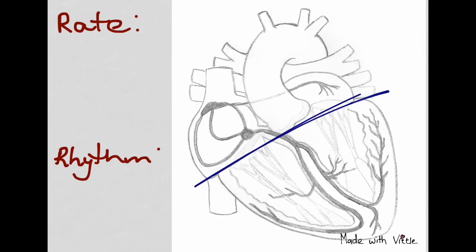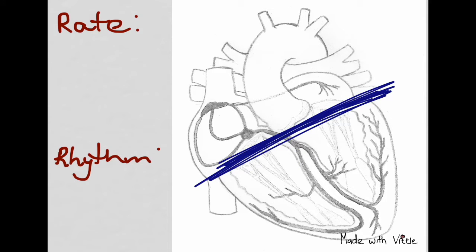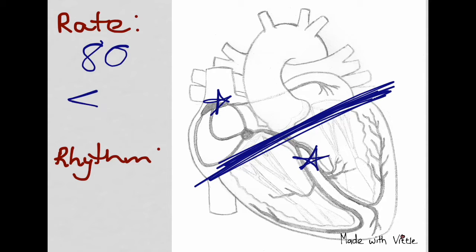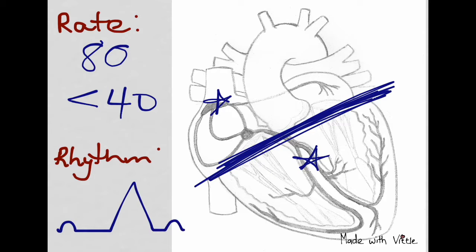In the event that there's a complete heart block with total blockage of atrial and ventricular firing, you'll have an atrial rate of 80 and a ventricular rate less than 40. It will show clear and upright P waves that march out consistently, but also wide and bizarre complexes from the ventricular rate.